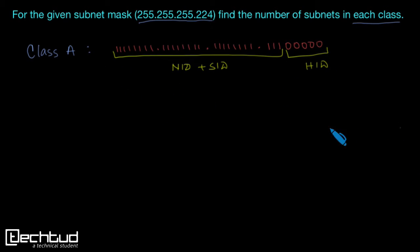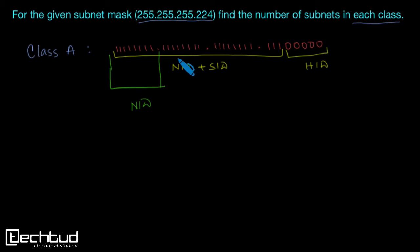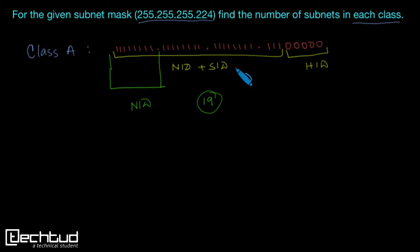For Class A, we know that the first octet is for NID. So the remaining bits for SID are: this 8, this 8, and these 3 bits — so it will be 19 bits. Therefore we can have 2 to the power 19 subnets.